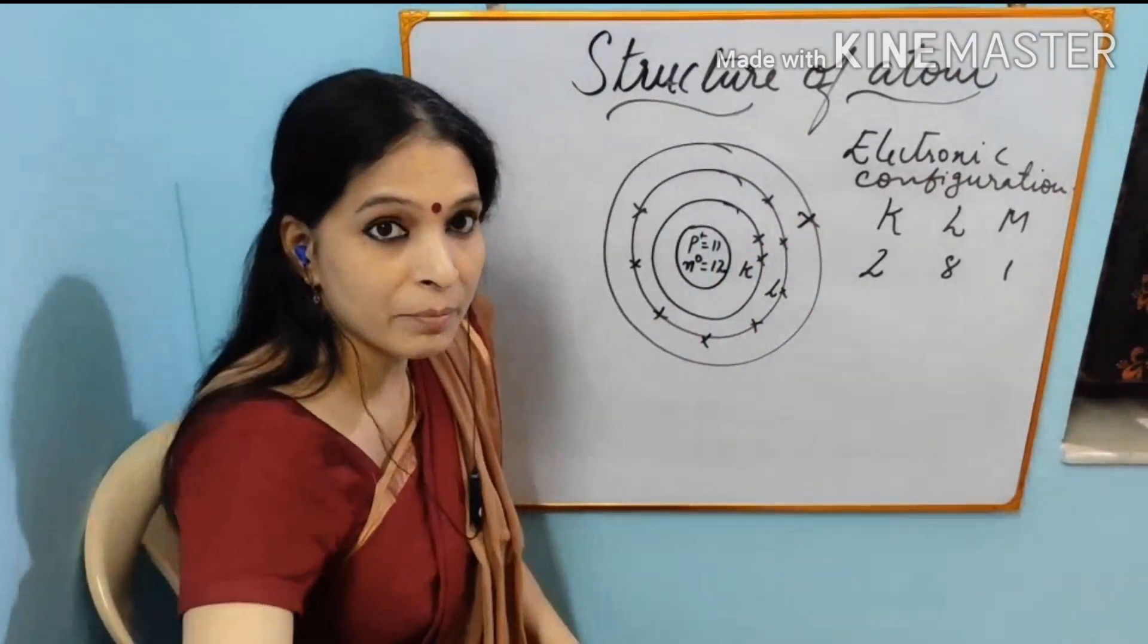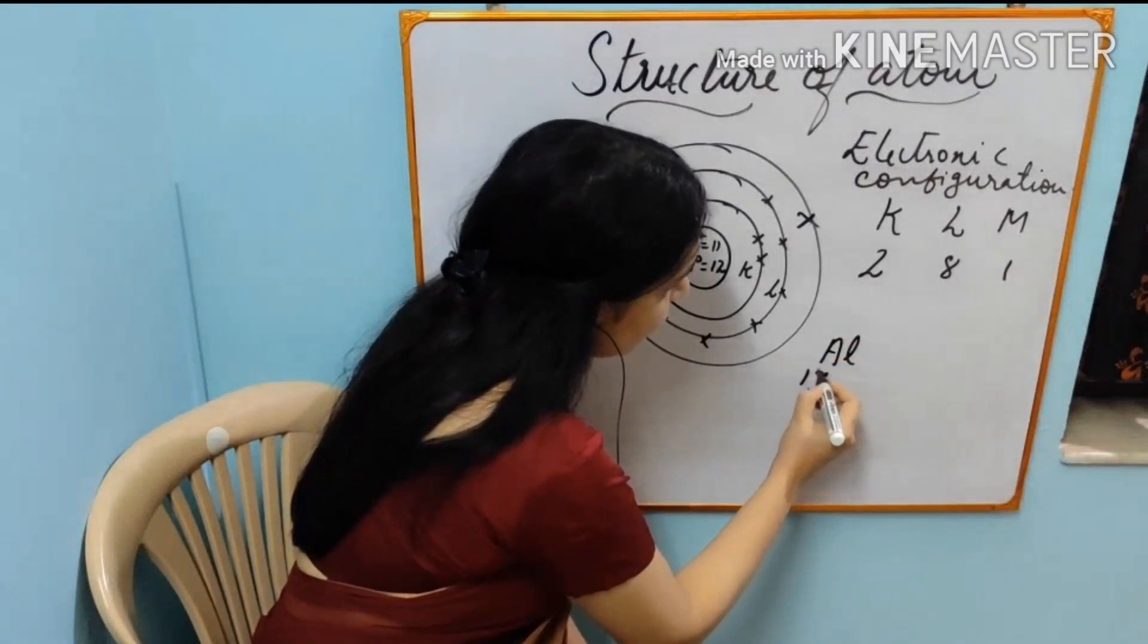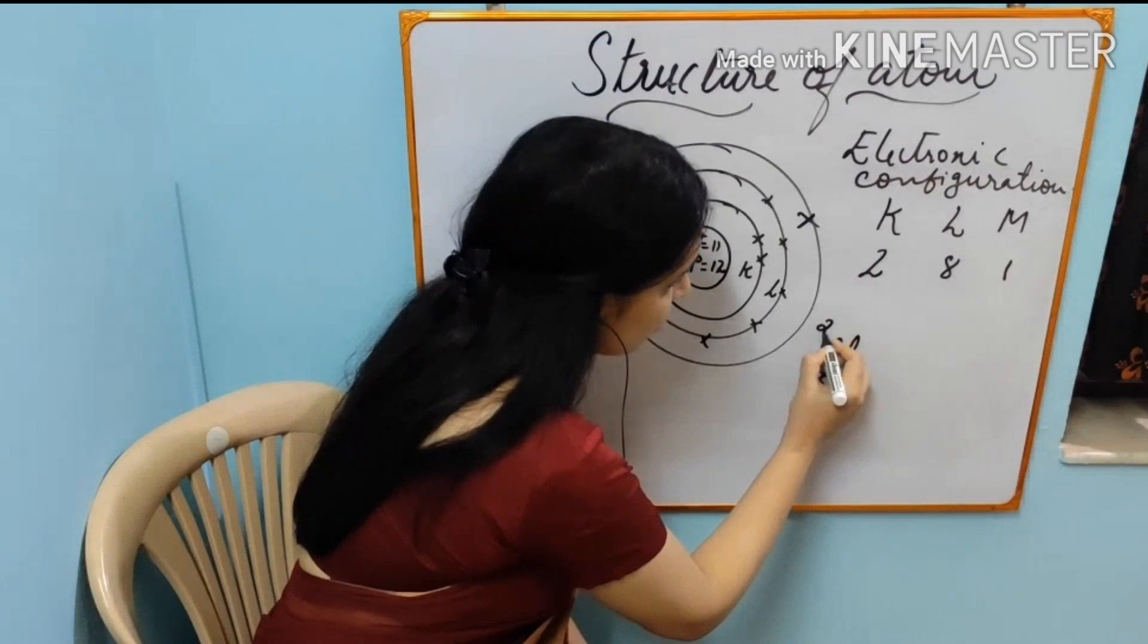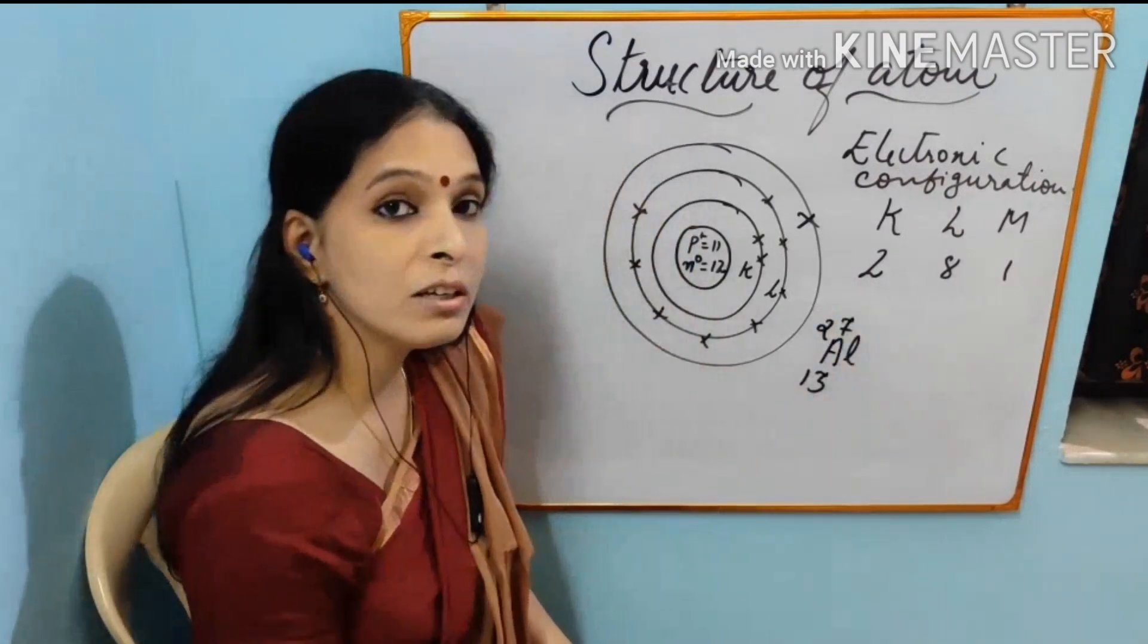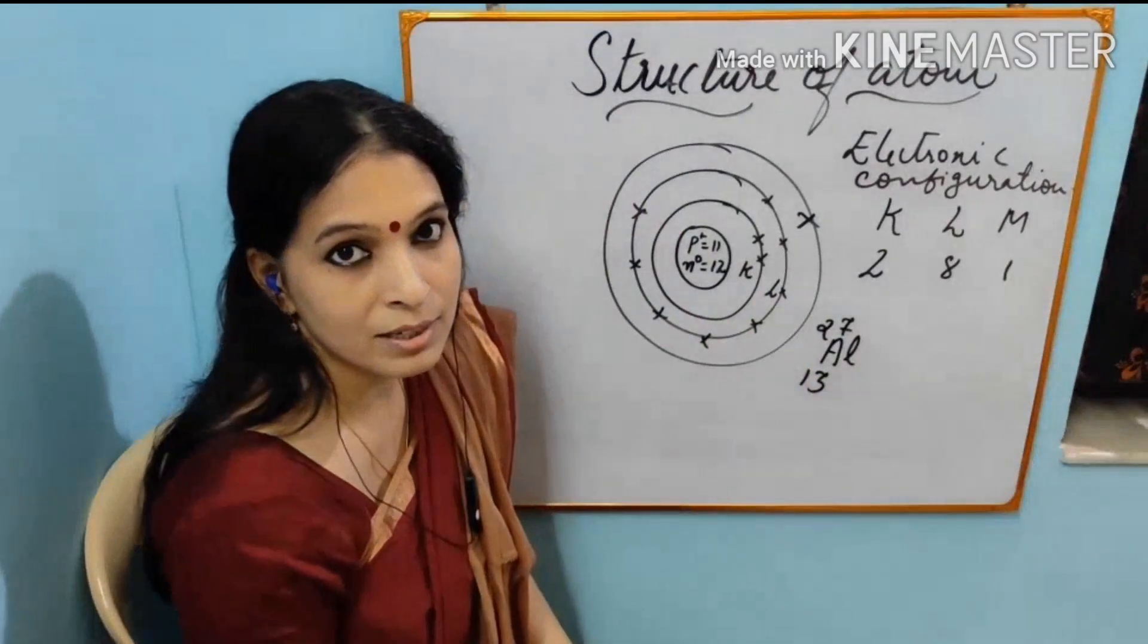One more example I can tell you. That is aluminum. Aluminium is atomic number 30 and mass number 27. For writing electronic configuration mass number is not at all needed. Only atomic number is needed.